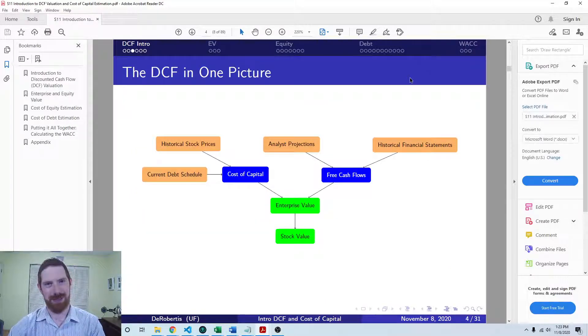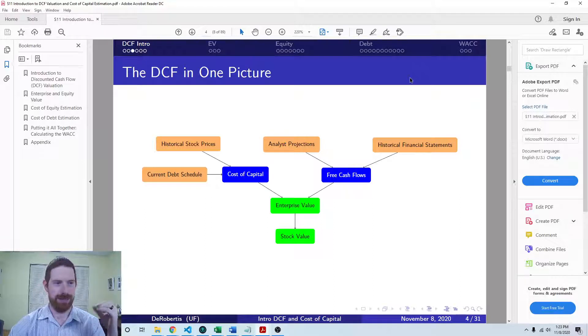So what's involved here in the DCF model? So there's two main sides of this model, the cost of capital and the free cash flow sides of the model. So you can broadly break it down into those two parts. There is a little bit outside of that in determining the enterprise value and stock value, but that's a very small part of the model.